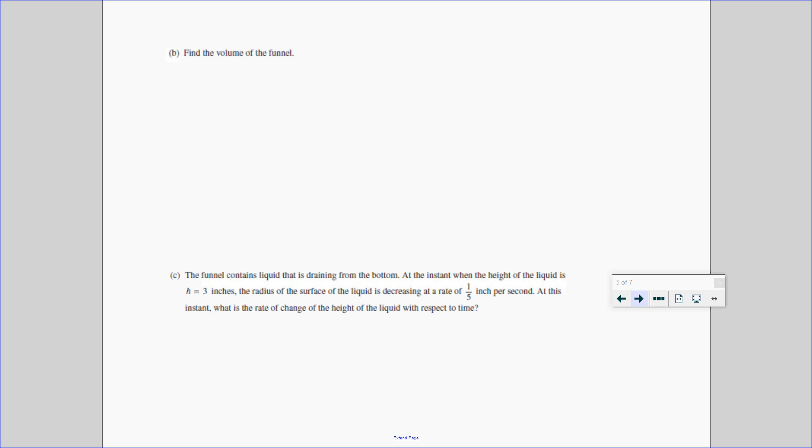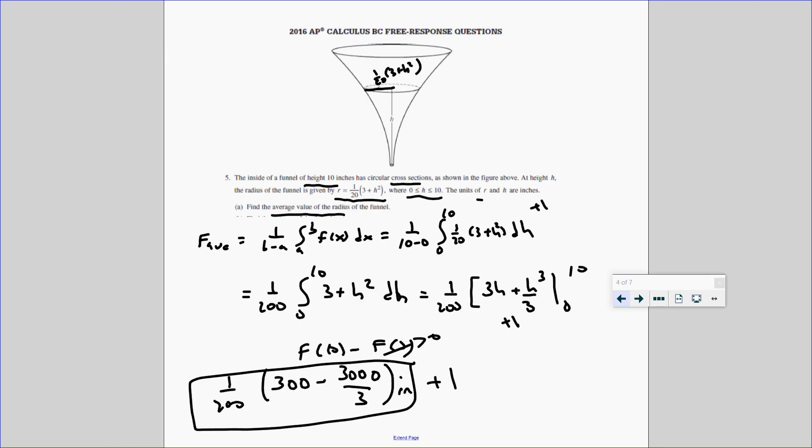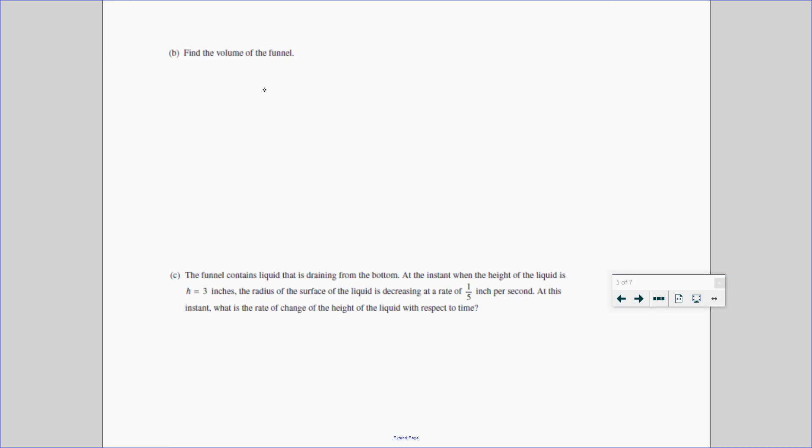And to do that, if we go back here, they're kind of giving us these little disks. So this is our disk method to find the volume. So if we draw our disk, there's our disk. This has a height, dh. And right here, here we have our radius. Now, the radius, remember, is 1 over 20, 3 plus h squared, right there.